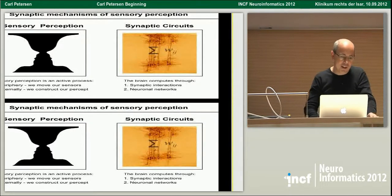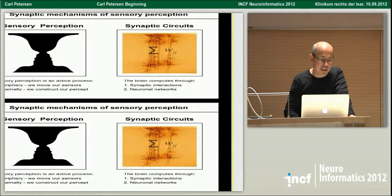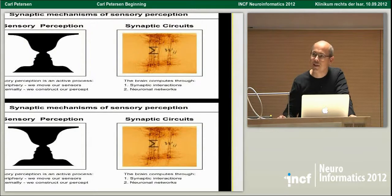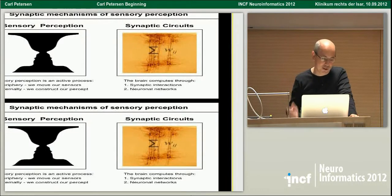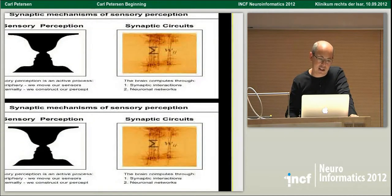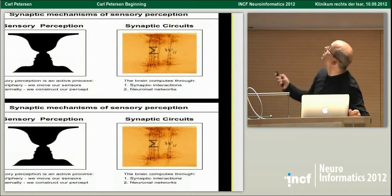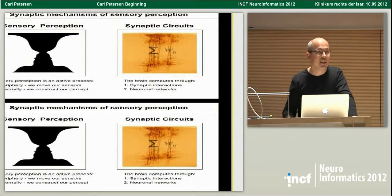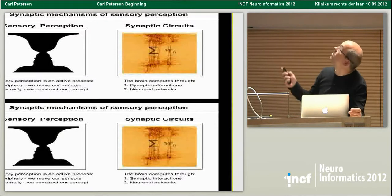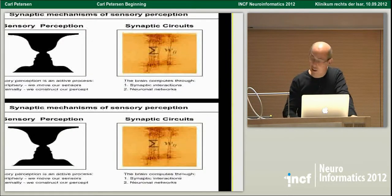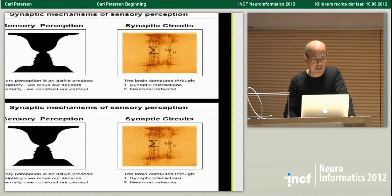Sensory percepts are generated internally in the brain — it's an active process. We usually go out and seek information through motor commands, so we sort of decide the sensory information that flows into the brain. Internally, neural cells construct sensory percepts, presumably through the interactions of nerve cells here in the neocortex. We're interested in getting to the level of detail where we know what individual neurons and their synaptic connections contribute to sensory perception.